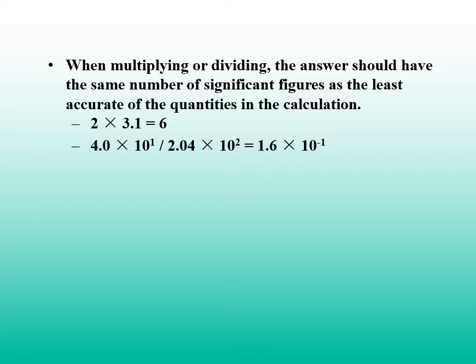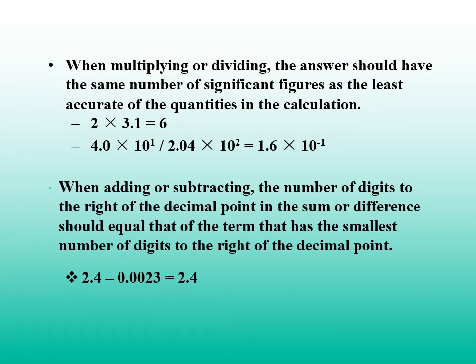4.0 times 10 raised to the power 1 divided by 2.04 times 10 raised to the power of 2 is equal to 1.6 times 10 to minus 1. When adding or subtracting, the number of digits to the right of the decimal point in the sum or difference should equal that of the term that has the smallest number of digits to the right of the decimal point. So, 2.4 minus 0.0023 equals 2.4.